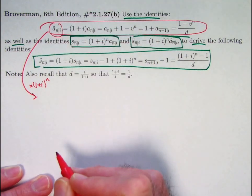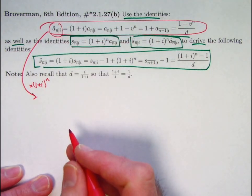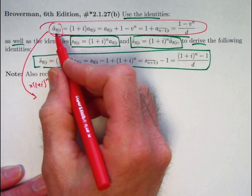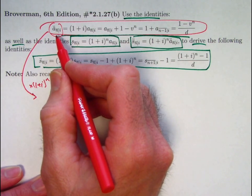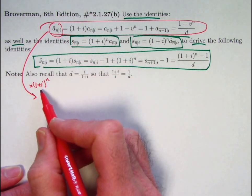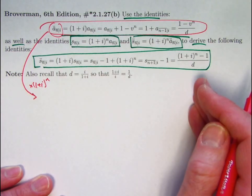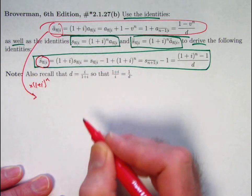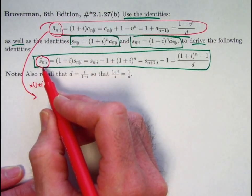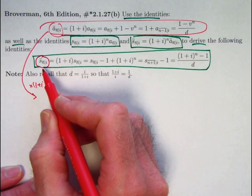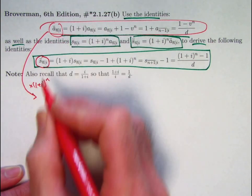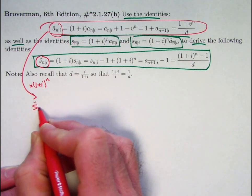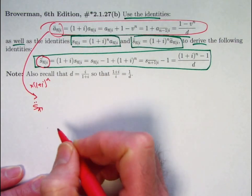This is the present value of an annuity due. You've got n payments of 1 separated by 1 period. You find this present value right before the first payment. When you multiply it by 1 plus i to the n that promotes it in time n periods into the future and by definition that gives you the future value of the annuity due. It's evaluated one period after the last payment. So by definition, a_n double dot times 1 plus i to the n does give you s_n double dot. And I will again suppress the i's to save some time here.